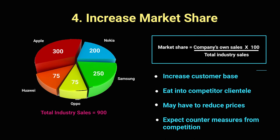Number four on our list of corporate objectives is increasing market share. Think of market share like a pie chart — 360 degrees and 100% — dividing a total market value into different proportions. For example, in the phone industry with Apple, Nokia, Samsung, Oppo, Huawei, and others, if 900 phones were sold in a year, Apple's market share is calculated as: company's own sales divided by total industry sales, multiplied by 100. So 300 divided by 900 multiplied by 100 gives 33% — meaning Apple owns 33% of the entire market.